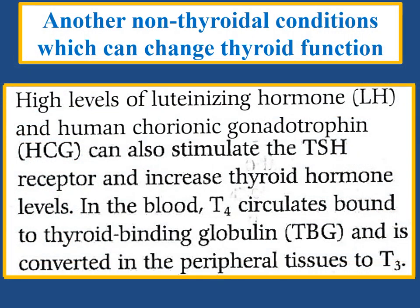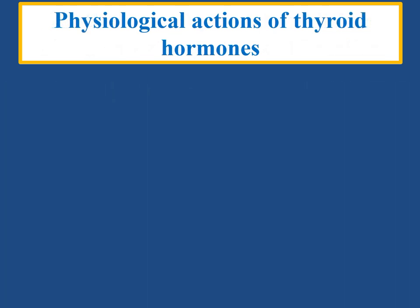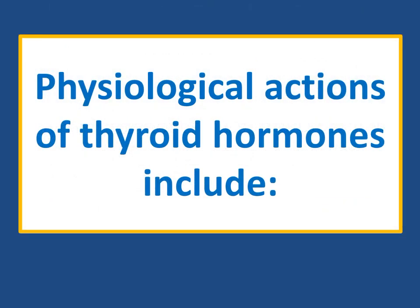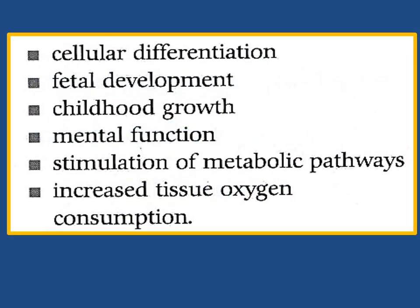Other non-thyroidal conditions which can change thyroid function include high levels of luteinizing hormone (LH) and human chorionic gonadotrophin (HCG), which can also stimulate the TSH receptor and increase thyroid hormone levels. In the blood, T4 circulates bound to thyroid binding globulin (TBG) and is converted in peripheral tissues to T3. Thyroid hormones pass into the cell and bind to nuclear receptors to regulate gene expression. Physiological actions of thyroid hormones include cellular differentiation, fetal development, childhood growth, mental function, stimulation of metabolic pathways, and increased tissue oxygen consumption.